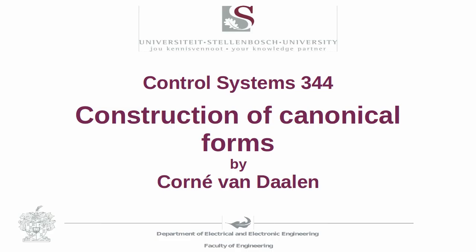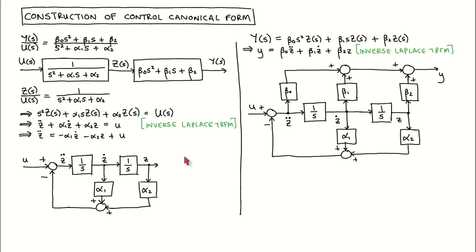So far, we have only stated the results and worked through examples. In this video, we develop the three canonical representations. We start with the control canonical form. The process we follow is to rewrite the transfer function so that we can draw a block diagram, choose appropriate signals as the states, and write down the state variable equations. We will do the development only for the second order case, and how to extend to higher dimensional systems should be clear.